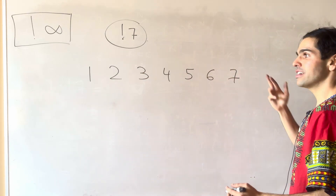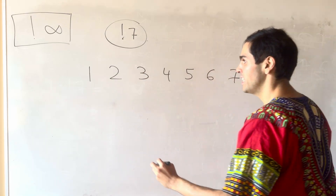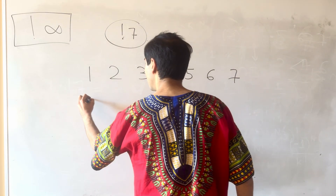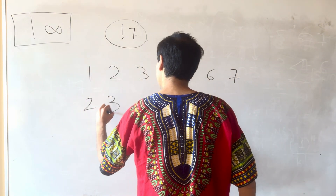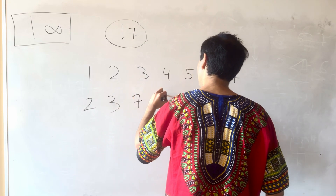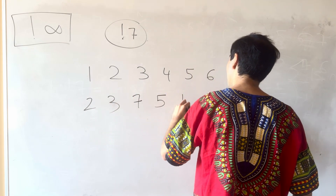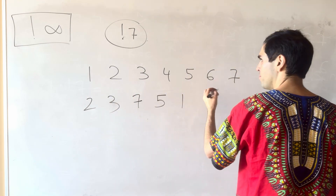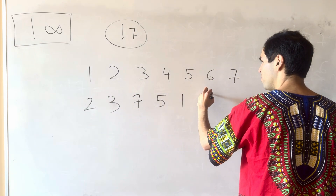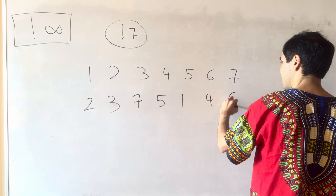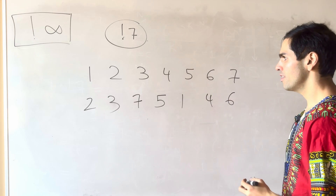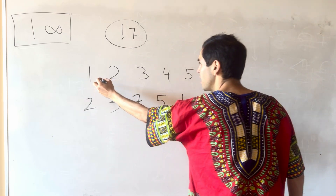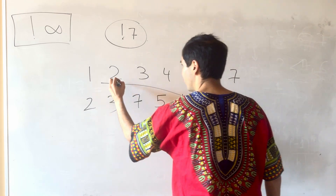So for instance, a derangement here would be 2, 3, 7, 5, 1, 4, and 6, for instance, where really everyone gets shuffled around.